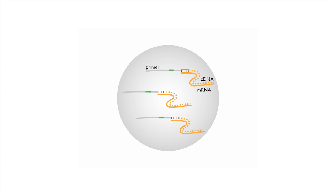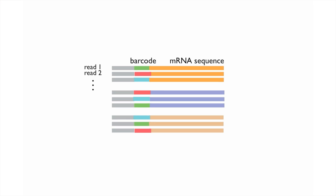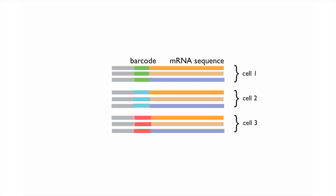What we end up with is a collection of DNA sequences, or copies of the RNA sequence, that are now divided by which drop they came from. Finally, we can break the droplets and treat the entire cell population as a single bulk sample, knowing that each one of the cells has been individually barcoded. After sequencing, we get a mixture of reads — each read will contain a different barcode — and we can group all of the reads from one cell together, and do the same thing for each one of the subsequent cells in our sample.